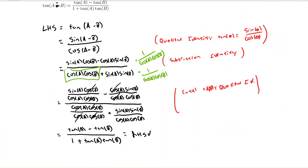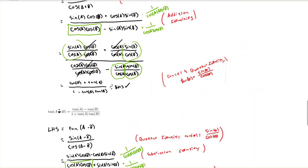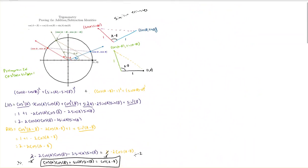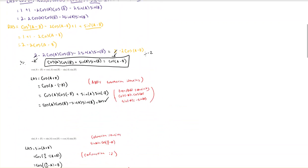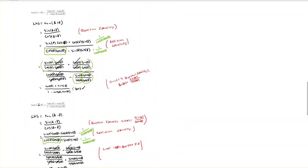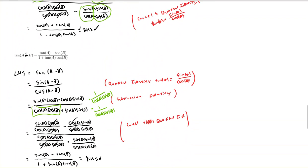We have now proved all of the addition and subtraction formulas. This is a lot of proofs in one video, but the only one that's really tricky is the first one — everything else is just clever applications of other identities you should already be familiar with. I hope you found this video helpful. If you did, hit the like button and have an awesome day.